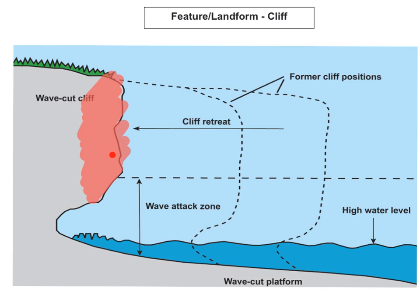As the cliff erodes further inland, a wave cut platform develops which may be seen at low tide. The eroded material will be carried out to the sea forming a wave built terrace. An example in Ireland is the Cliffs of Moher in County Clare. An example of a wave cut platform that can be seen at low tide would be in Lockshiny in County Dublin.